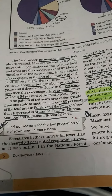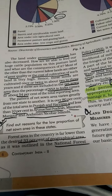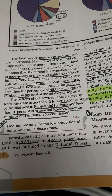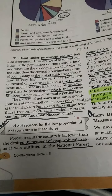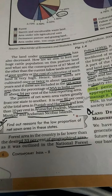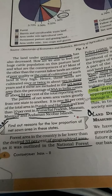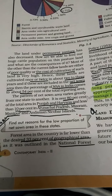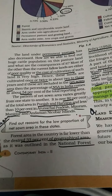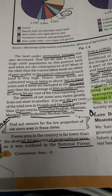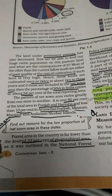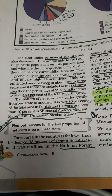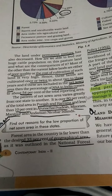Land under permanent pasture has also decreased. However, we are still able to feed our large cattle population on this pasture land. Most of the non-current fallow lands are either of poor quality or have very high cultivation costs, so these lands are cultivated only once or twice in about two or three years.